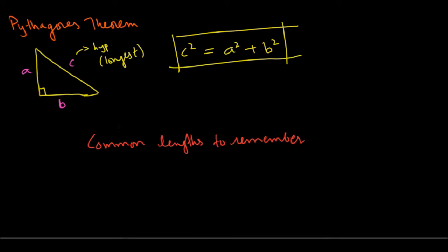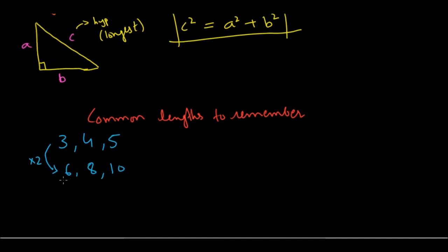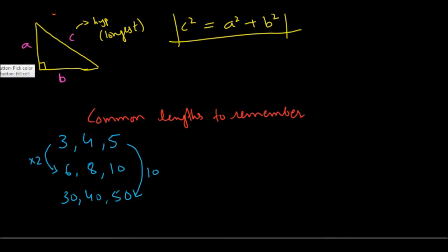There are some common side lengths of right triangles to remember. One very common one is 3, 4, 5 — where 3 and 4 are the two shorter sides and 5 is the hypotenuse. Any ratio of these works: multiply by 2 to get 6, 8, 10; multiply by 10 to get 30, 40, 50. The other important one is 5, 12, 13, and similarly all ratios work: 10, 24, 26 or 25, 60, 65. These are two very common right-angle triangles.